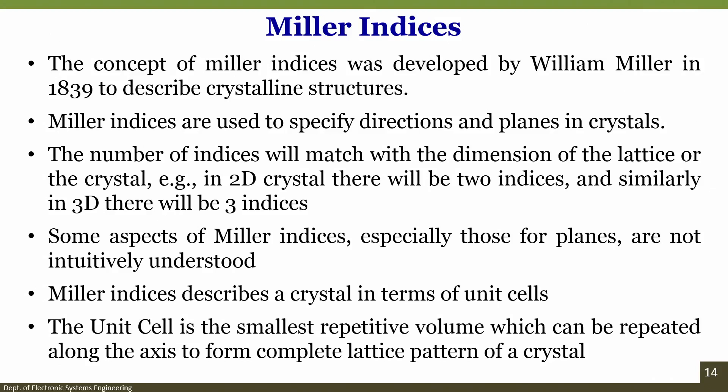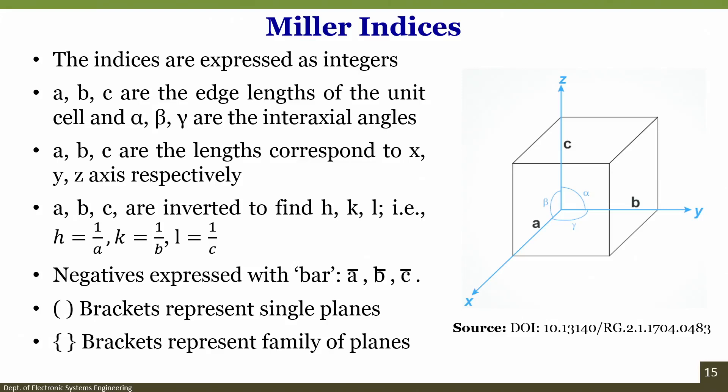Miller indices were developed by William Miller in 1839 to describe crystalline structures. They are used for specific directions and planes in crystals. The number of indices matches the dimension of the lattice — in a 2D crystal there are 2 indices, in a 3D crystal there are 3 indices. A unit cell is the smallest representative volume which can be repeated along the axis. In a unit cell, a, b, and c are edge lengths while α, β, and γ are the interaxial angles. a, b, and c correspond to x, y, and z. They are inverted to find h = 1/a, k = 1/b, and l = 1/c.